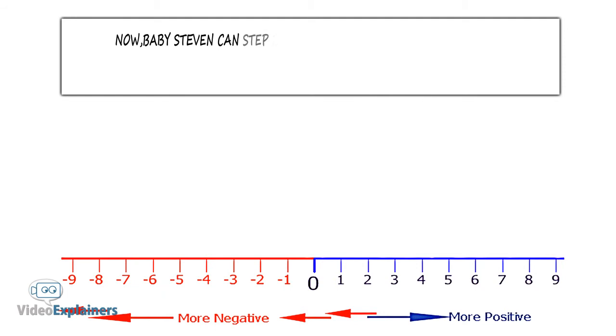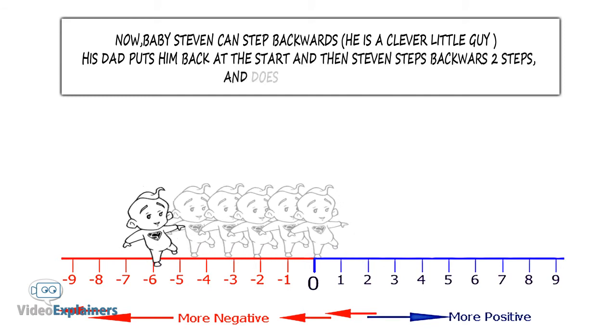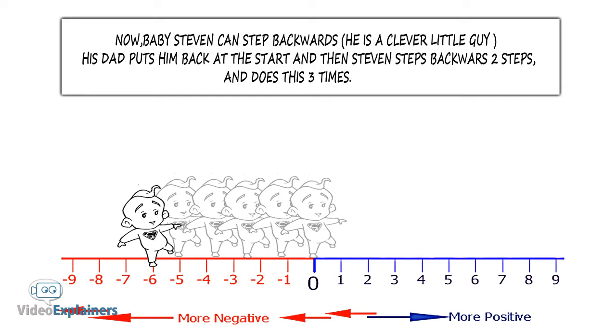Now, baby Steven can also step backwards. He is a clever little guy. His dad puts him back at the start and then Steven steps backwards two steps and does this three times.